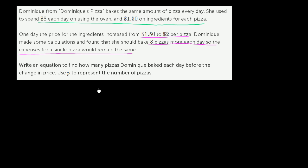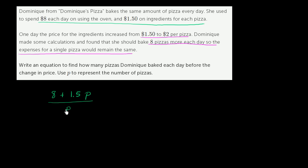Let's think about her total cost per pizza before, and then her total cost per pizza after, if she bakes eight more pizzas. Before, using P as the number of pizzas per day, she would spend $8 on the oven and $1.50 times the number of pizzas on ingredients. This is her total cost — oven cost plus ingredients cost — and dividing by P gives cost per pizza.